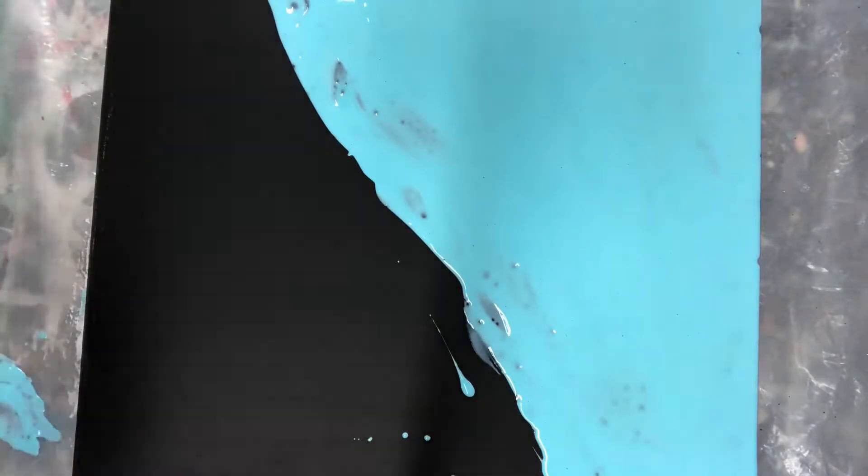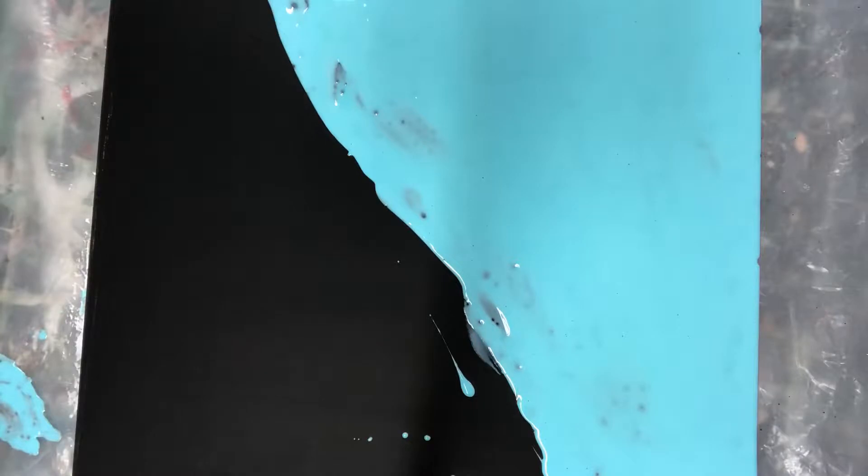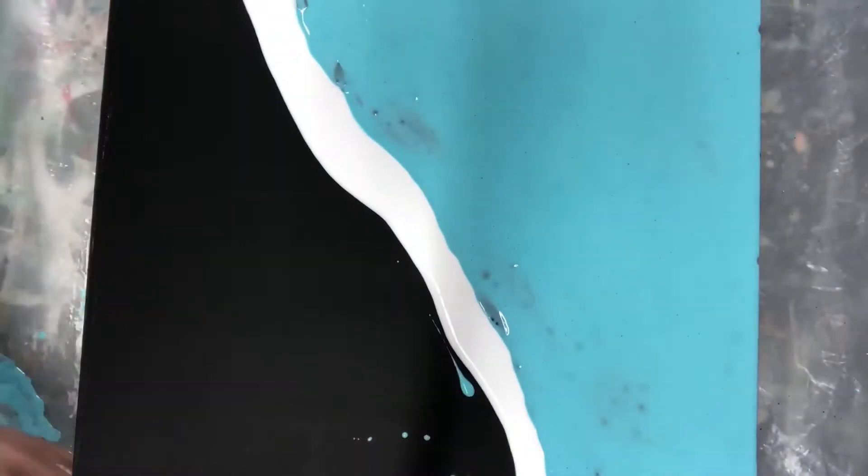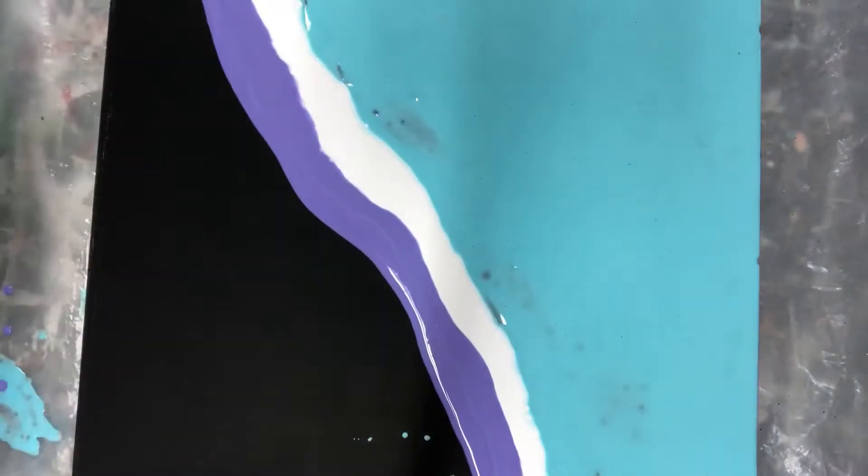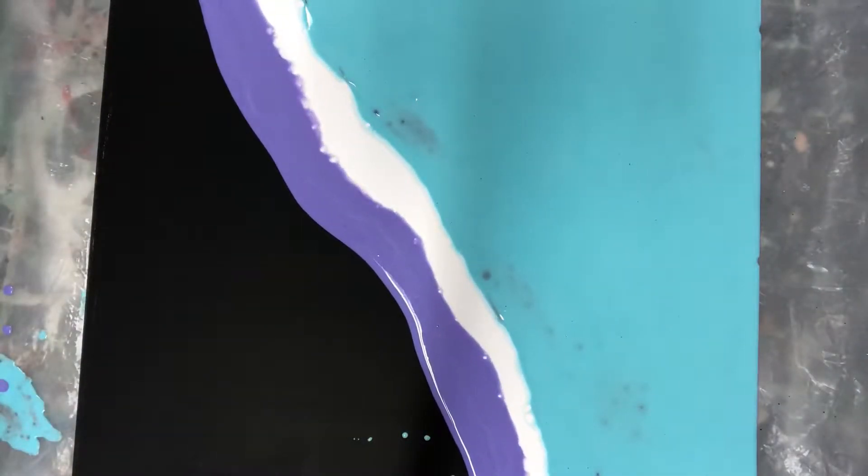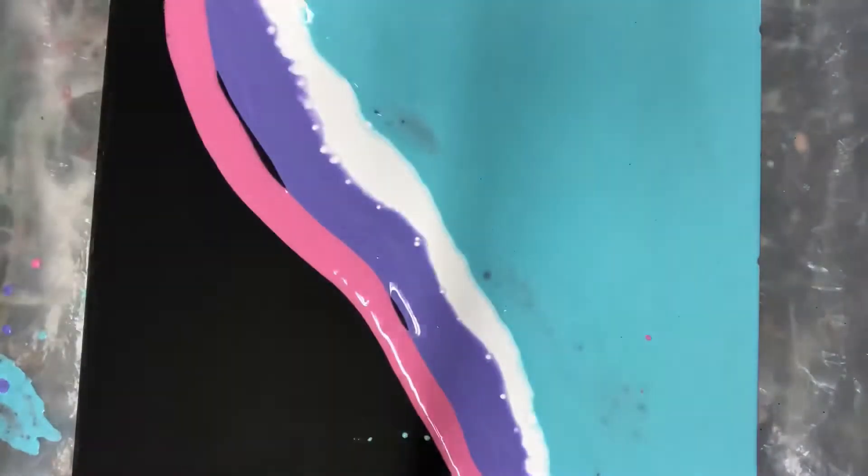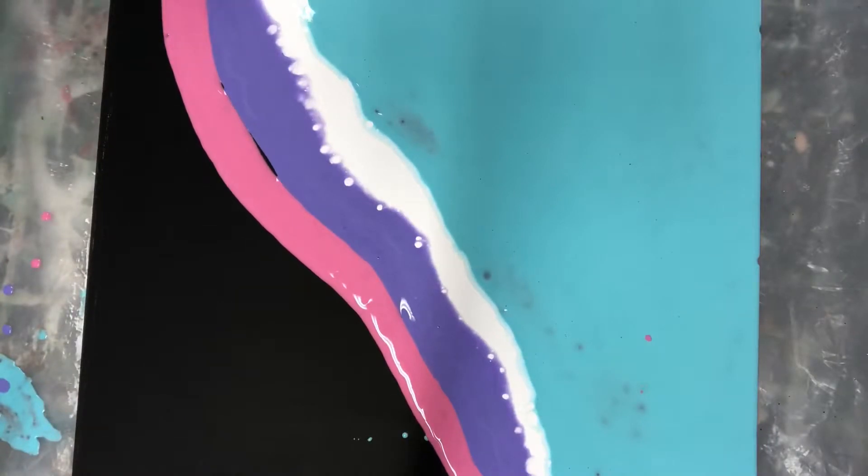So now I have the top part covered in the light blue and I'm going to take some multiple colors like white, black, pink, and purple and just sort of go back and forth with some thin lines back and forth over my square.